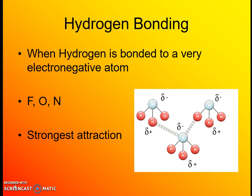Ammonia (NH3) is an example — nitrogen bonded to hydrogens creates a very polar bond. The molecule is asymmetrical with a trigonal pyramidal shape, because the two unshared electrons at the top of the nitrogen push the hydrogens down. This results in a negative side on the nitrogen end and a positive side on the hydrogen end of the molecule.